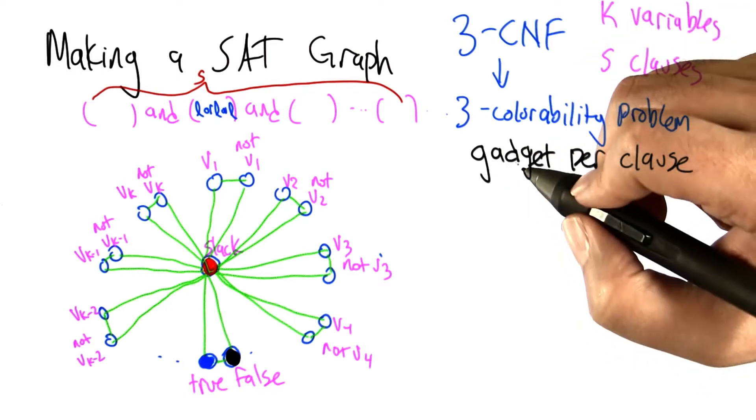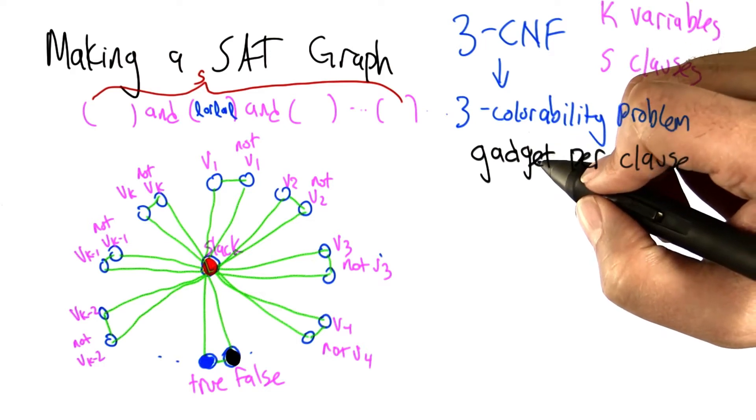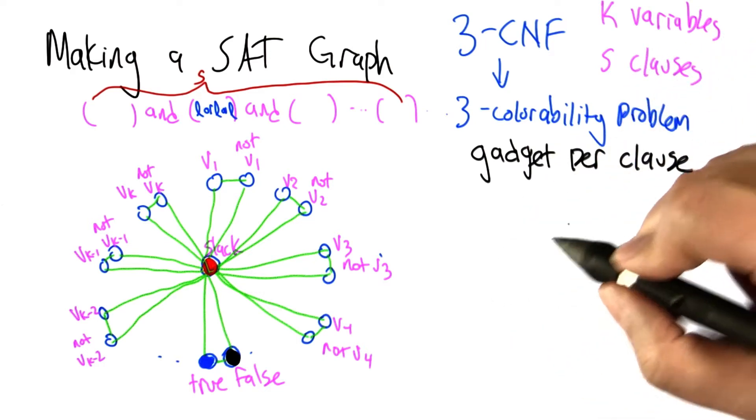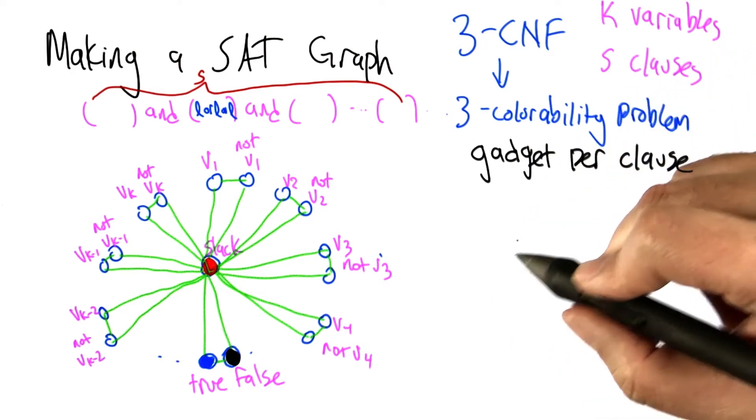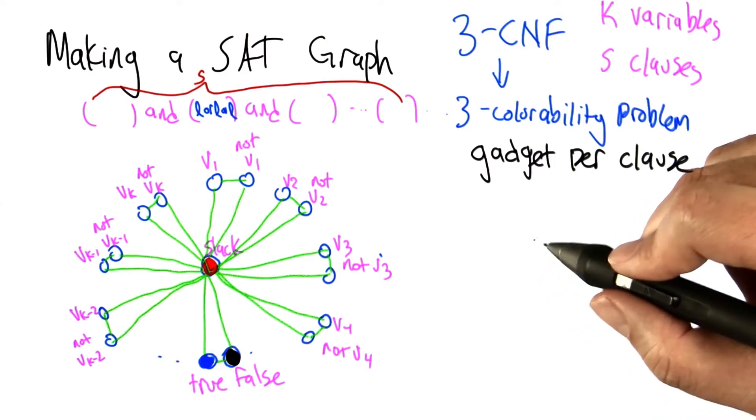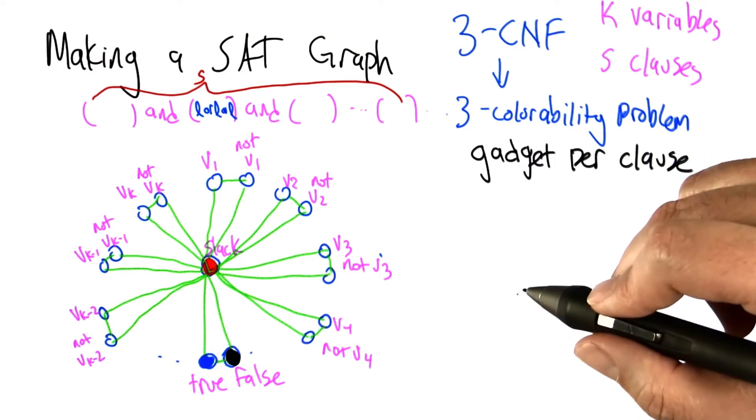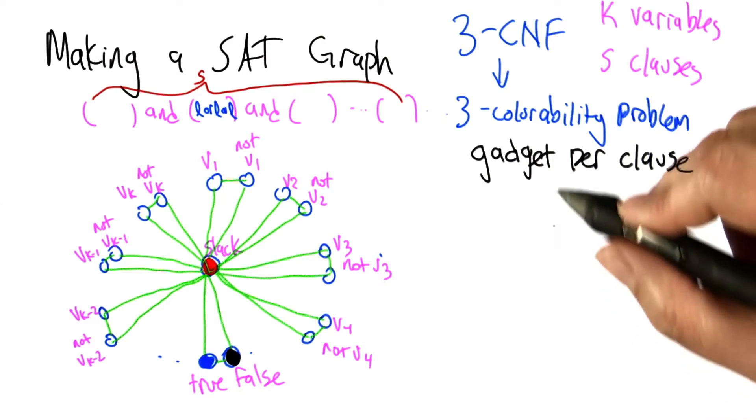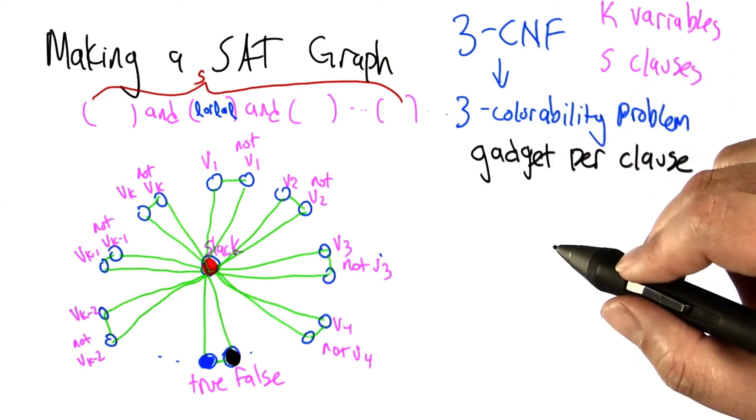These gadgets come up a lot in NP completeness proofs. In this case, it's going to be a little piece of a graph, but it's going to be a little piece of a graph that has particular mechanics to it that makes the graph act like a 3SAT problem.